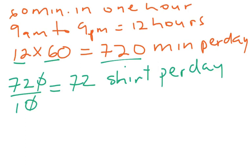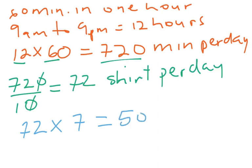Finally, how many days are in a week? Seven days in one week. So we multiply 72 by 7, and that will give us 504 shirts per week.